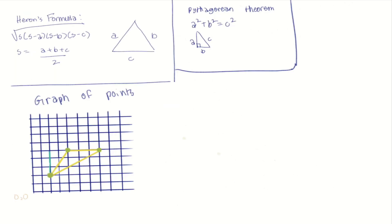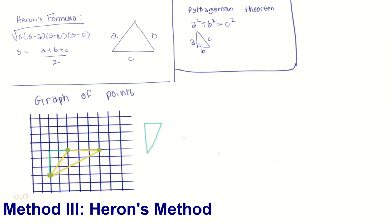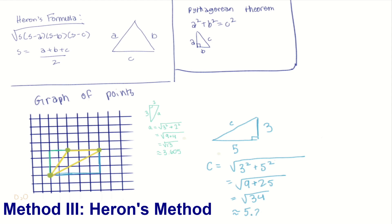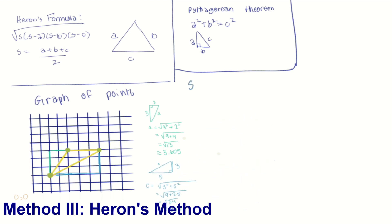To use Heron's theorem, we're going to need to find all of the sides. First, we're going to draw a right triangle using the grid lines, and it's going to have legs of 2 and 3. We use the Pythagorean theorem to find that the missing side is around 3.605. We do this on the other missing side of the large original triangle, and we have legs 3 and 5, and we use the Pythagorean theorem again to find that it's about 5.830 units. After doing all of this, we find that the sides are 3, 3.605, and 5.830.